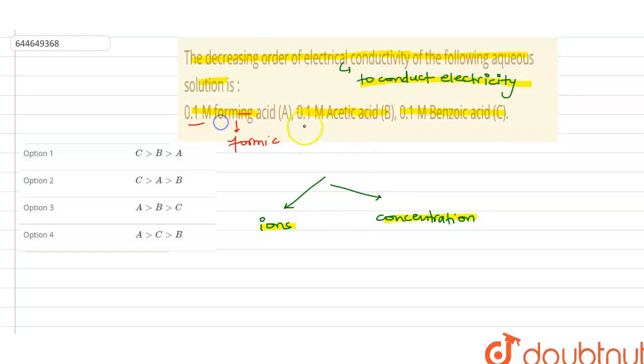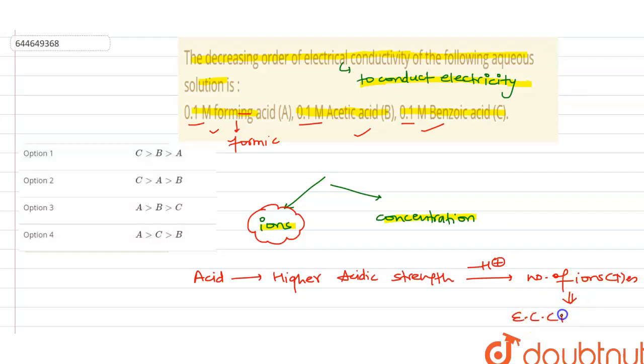Here, in all cases, the concentration is constant, so the conductivity of the compounds will depend upon the number of ions. All the compounds are acids. If an acid has higher acid strength, it can easily lose the proton (H+ ion), and the number of ions increases. Thus, electrical conductivity also increases. Electrical conductivity can be predicted by how easily an acid donates its H+.